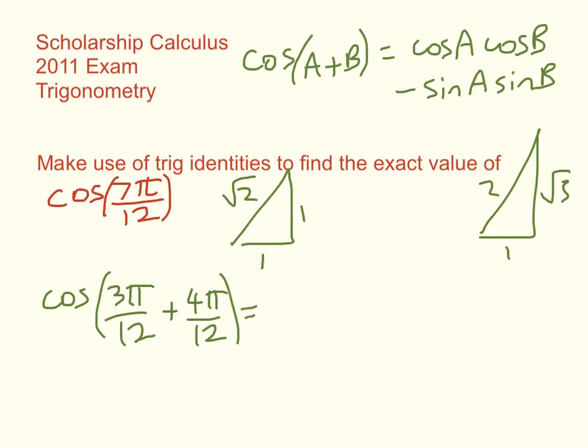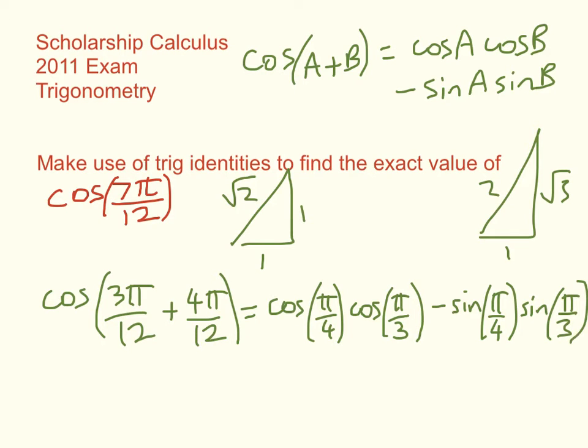Right. So cos of 7π/12 works out to be cos π/4 cos π/3 minus sin π/4 sin π/3. And we get 1/√2 times 1/2 minus 1/√2 again times √3/2. I'll simplify that on the next slide.